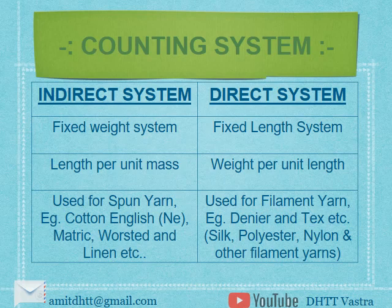Next, counting system. Counting system is broadly classified into two types: indirect system and direct system. Indirect system is also called fixed weight system and is calculated on length per unit mass. This system is used for spun yarn. Some examples of the indirect system are: New English cotton system, metric, worsted, linen, etc. The direct system is also called fixed length system, and calculation is based upon weight per unit length. This system is used for filament yarns like silk, polyester, nylon, and other filament yarns. Denier and tex are the mostly used examples of the direct system.